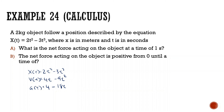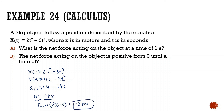Plugging in t = 1: a = 4 − 18(1) = −14 m/s². Net force = mass × acceleration = 2 × (−14) = −28 newtons.